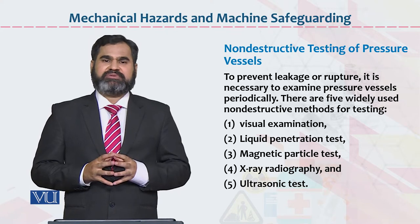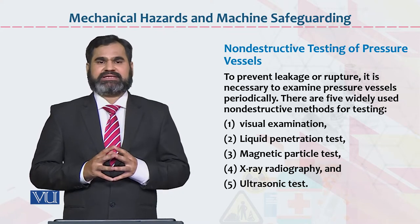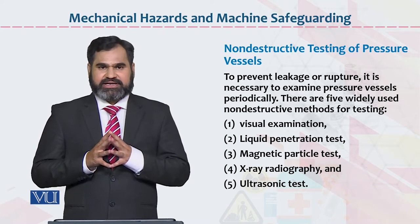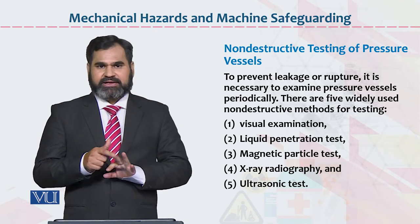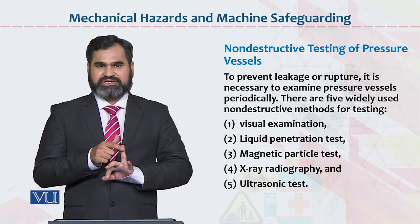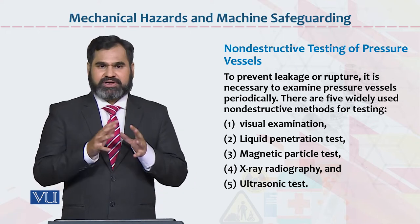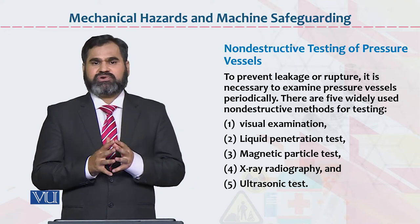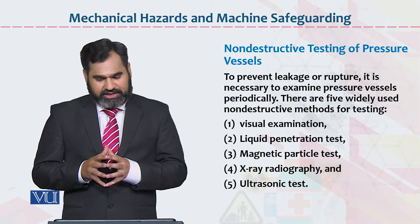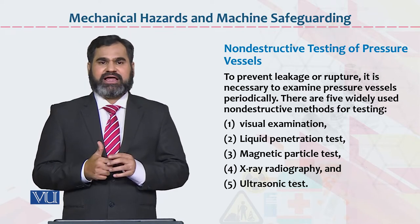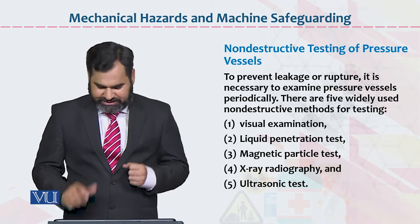अब यह जो पांचों चीज़े हैं यह basically क्यों की जाती हैं? इन पांचों का एक मकसद है कि organization में कहीं पे leakage है, कहीं पे कोई problem है, कहीं पे pressure के वज़ह से organization के block हुई कोई नाली — इन सब चीज़ों को देखने के लिए हम यह पांचों test use करते हैं. इन पांचों का मकसद है कि organization में अगर कहीं पे कोई problem है तो उसको check किया जा सके.